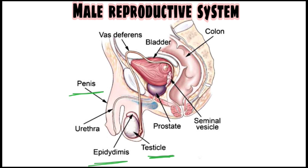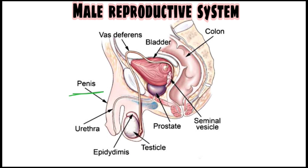The testis is present inside a layer of skin known as the scrotum. There are two testes present in the male body, and the testis is the place where sperm is produced. These are the external reproductive organs.